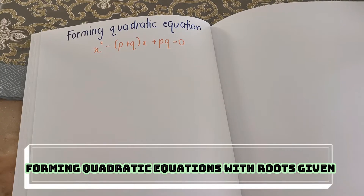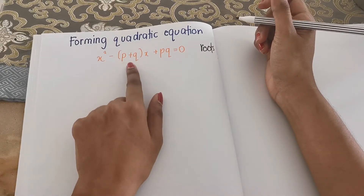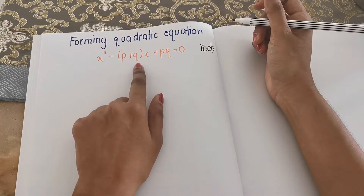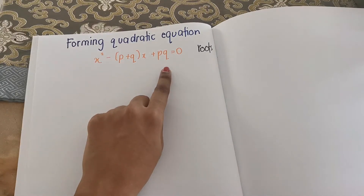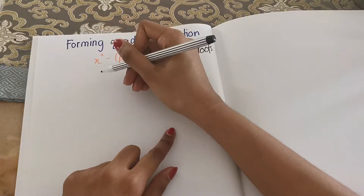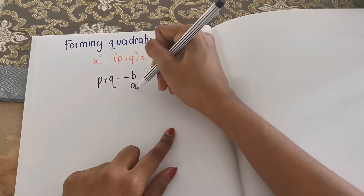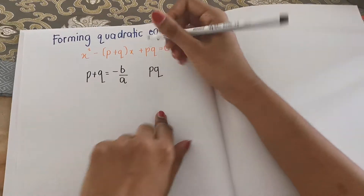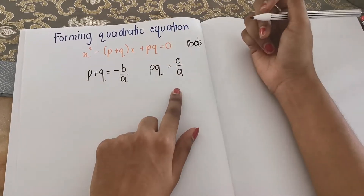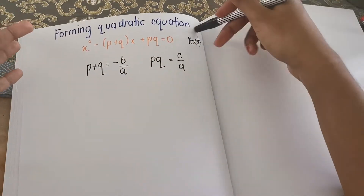Let's look at how to form a quadratic equation when you are only given the roots. When you are only given the roots, your B will be P plus Q and your C will be PQ. So your P plus Q is negative B over A, and your PQ will be C over A. This is how we form a quadratic equation if the roots are given.